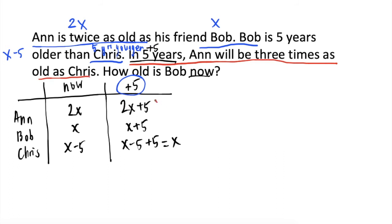So, ang titignan natin ang positive five column. Ang age ni Ann, which is 2x plus five, will be equal to three times as old as Chris. So, ang age ni Chris in five years, which is x, ay imultiply natin by three. Writing it in equation form, we will have 2x plus five is equal to 3x.